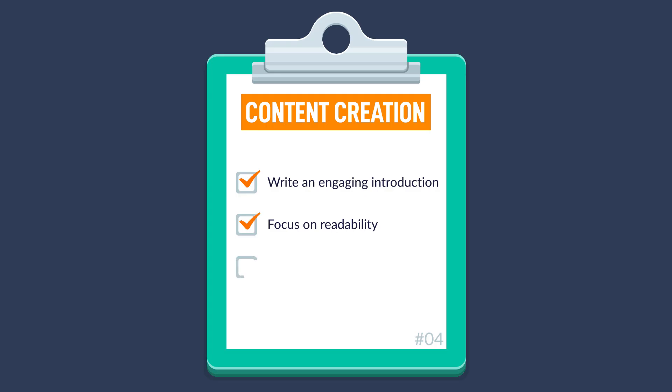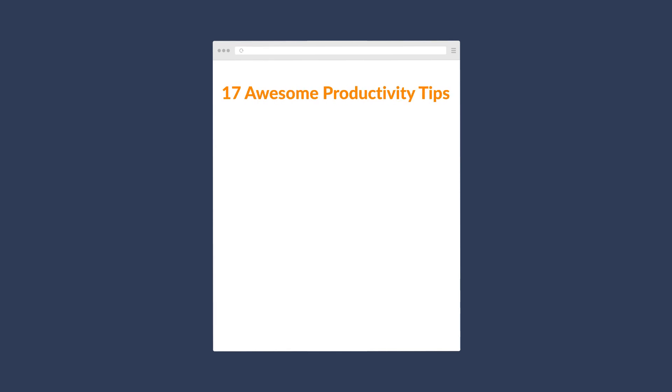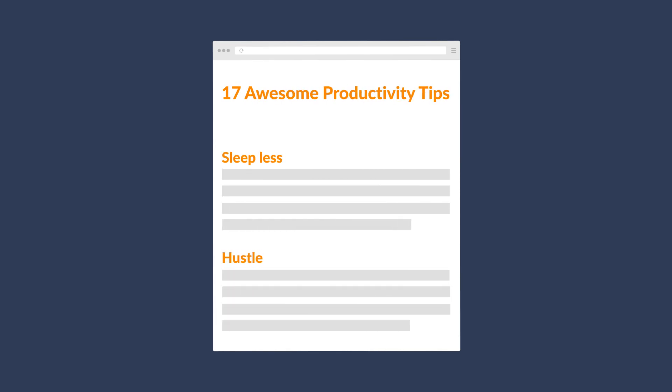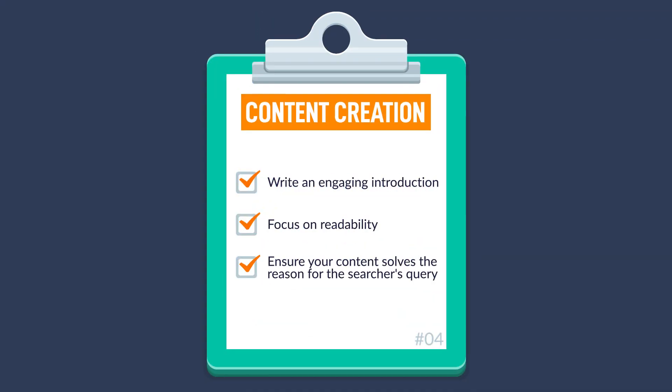The last part of the content checklist is to ensure your content solves the reason for the searcher's query. Great content solves a user's problem. For example, if you have a post on productivity tips, try to go beyond things like 'sleep less and hustle.' Someone searching for productivity tips probably wants practical and actionable information they can try right away and wants to know how they can measure whether their productivity levels are increasing. If your content solves their original problem and answers questions that might come to mind as they're reading, then you probably have some decent content. Here's what the final content checklist looks like.